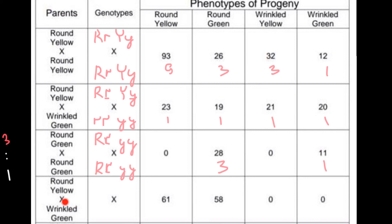Next row: the first parent is round yellow and the second is wrinkled green. For the first parent, at least one dominant R and one dominant Y allele must be present. The second parent — wrinkled green — must be rryy, since both traits are recessive. We know the full genotype of the second parent and now need to find the first parent's genotype from the progeny.